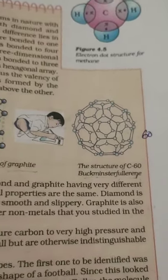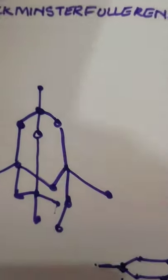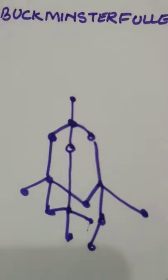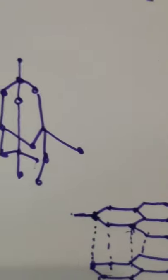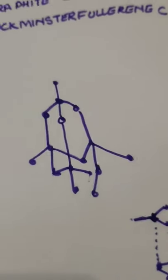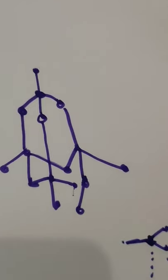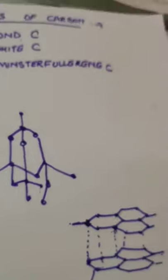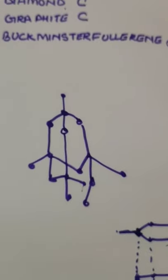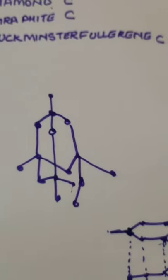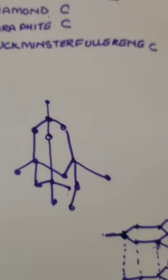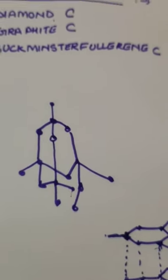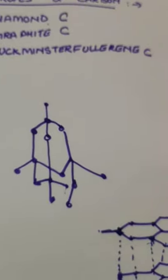The important points to remember are about diamond and graphite. Diamond does not conduct electricity because it has no free electrons, whereas graphite conducts electricity because it has one free electron per carbon atom. In the next lecture, we will be learning about covalent bonds. Till then, do the question answers and study hard. Thank you.